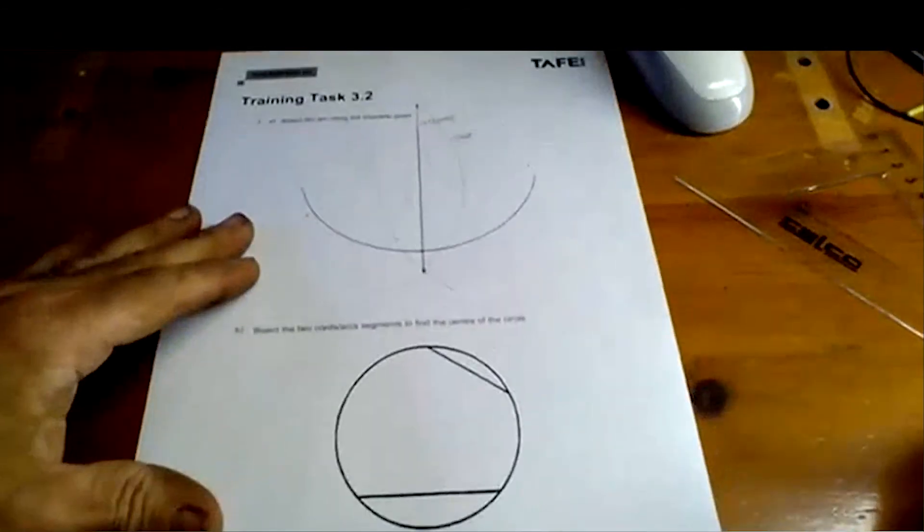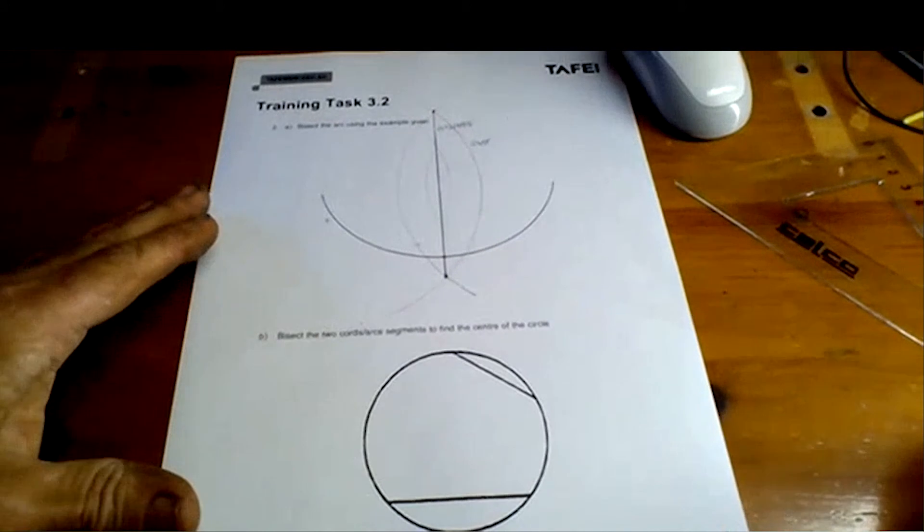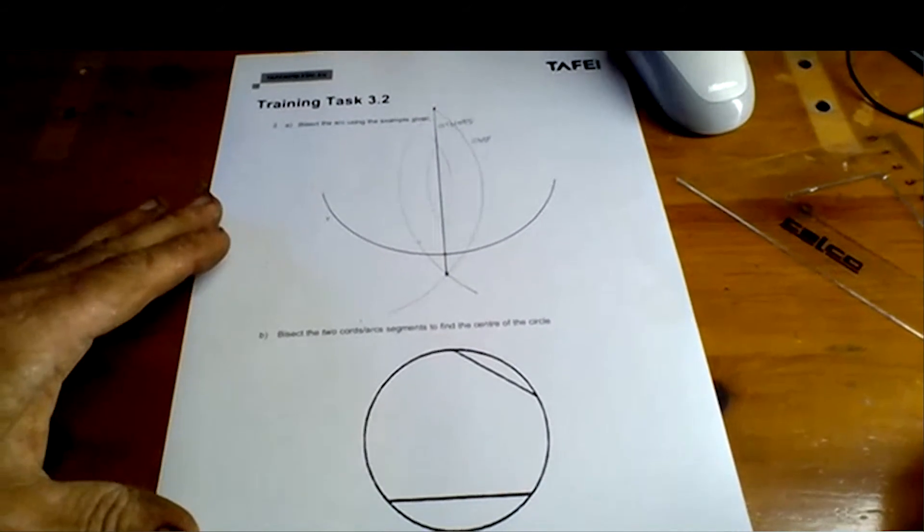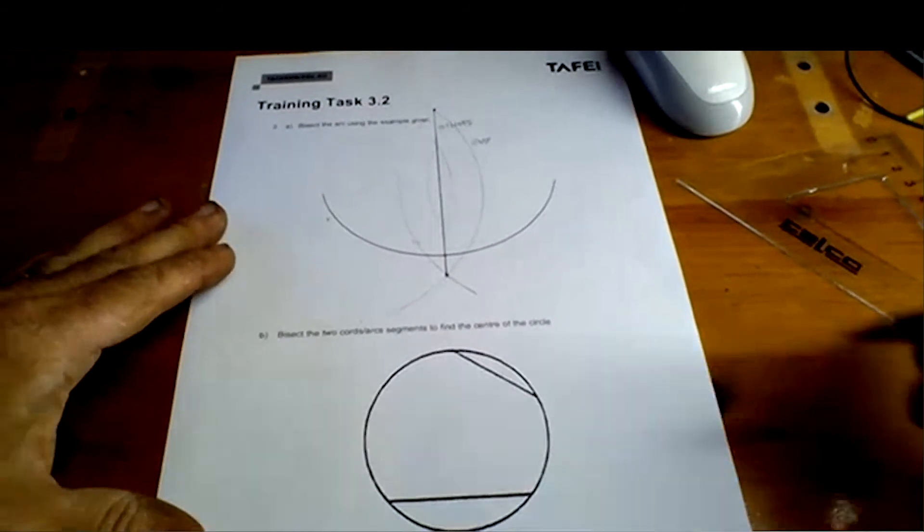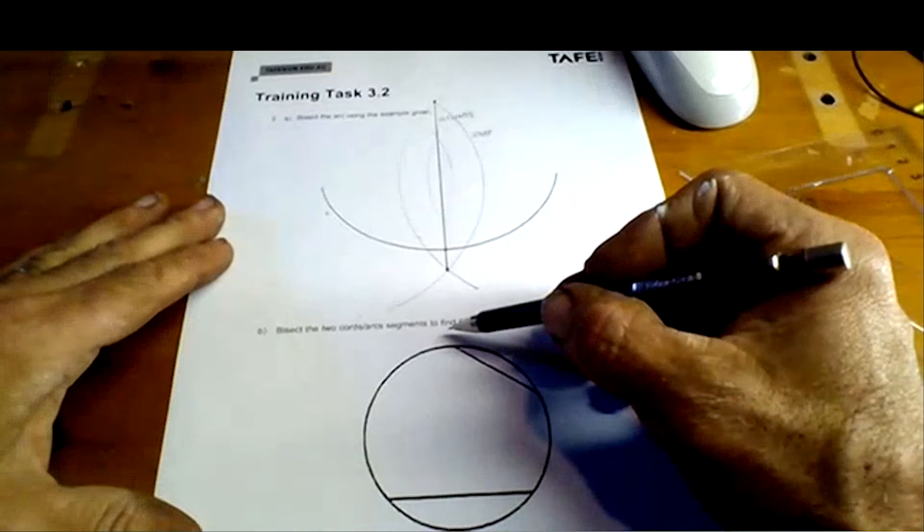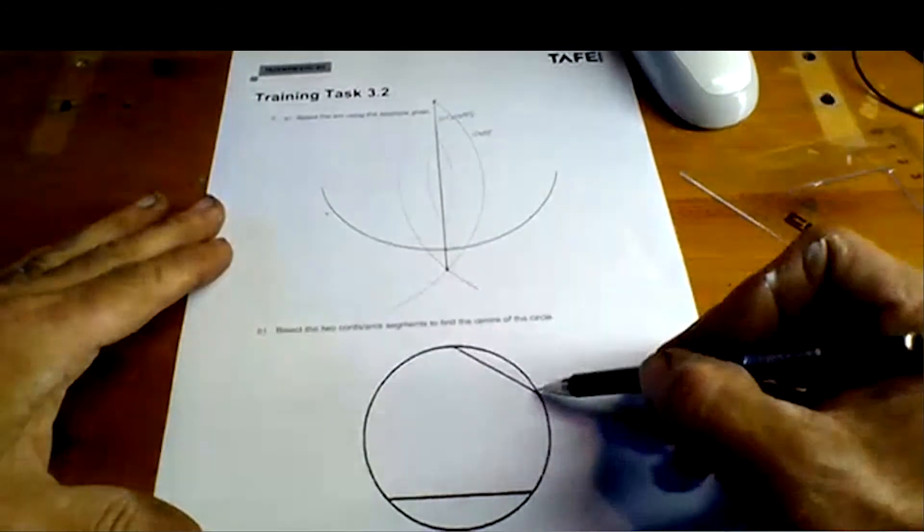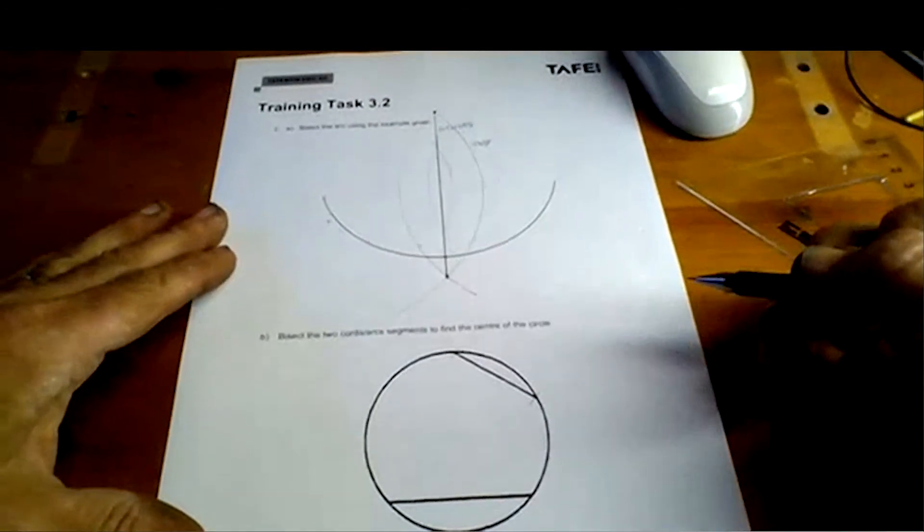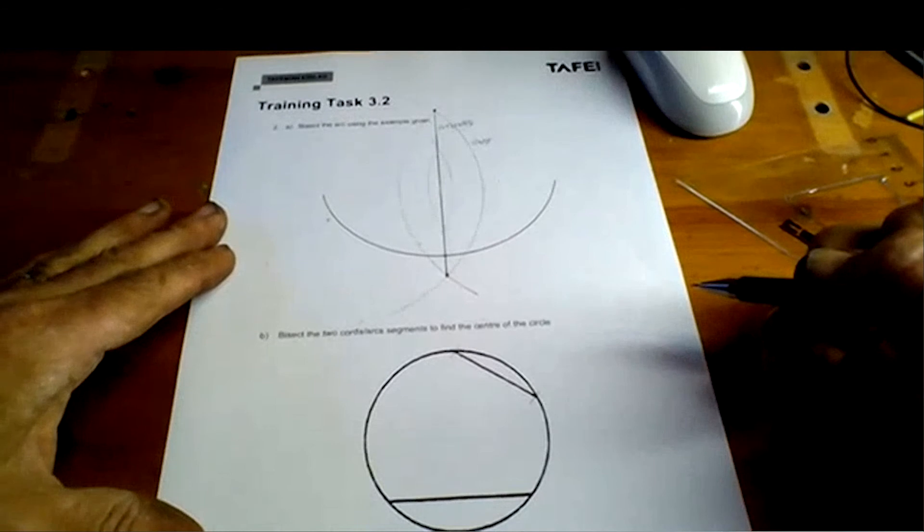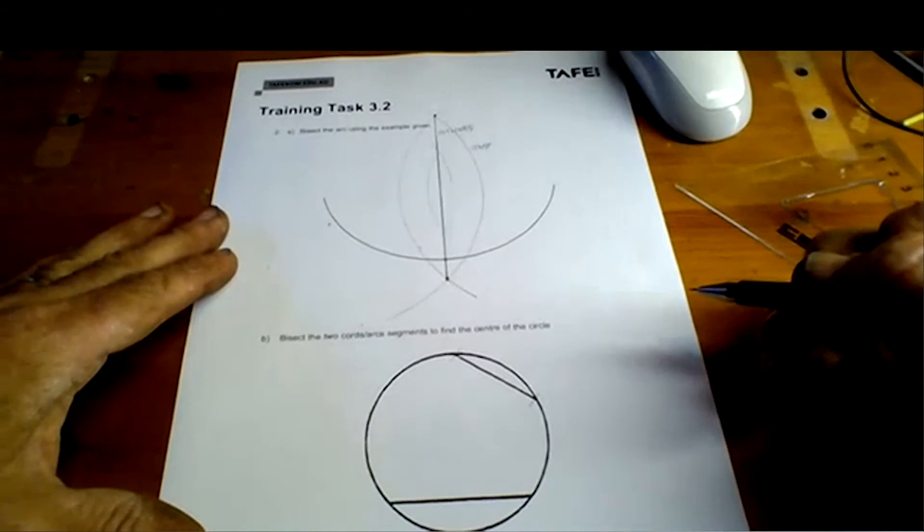Number three. This time we're going to make an application of the bisection lines. We're going to use these two lines that cut the circle. They're called chords, and by bisecting each chord we'll find the center of the circle.